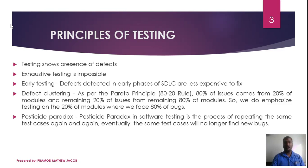The next principle is the Pareto Principle, also called defect clustering. The Pareto Principle is the 80-20 rule. For example, if there are 100 modules and errors are found, 80% of the errors will be found in 20% of the modules. This principle is called the Pareto Principle.